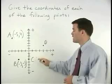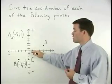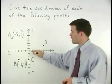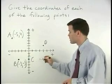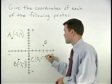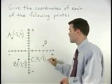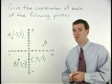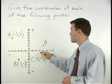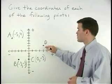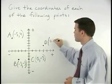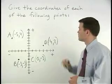For point C, we go 0 units to the left or right and 3 units down. So that's 0, negative 3. And for point D, we move 4 units to the right and 2 units up. So that's 4, 2.